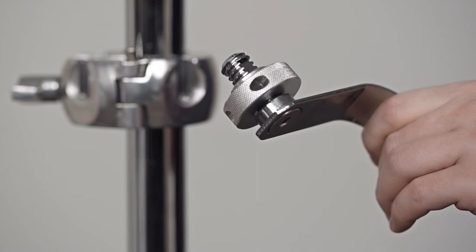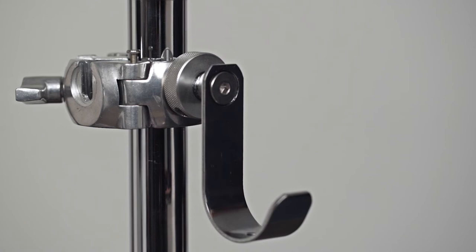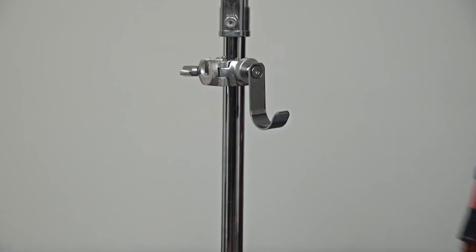Slide the squared end of the J-hook into the square notch in one of the mounting positions on the clamp and turn the locking collar clockwise to secure in place.